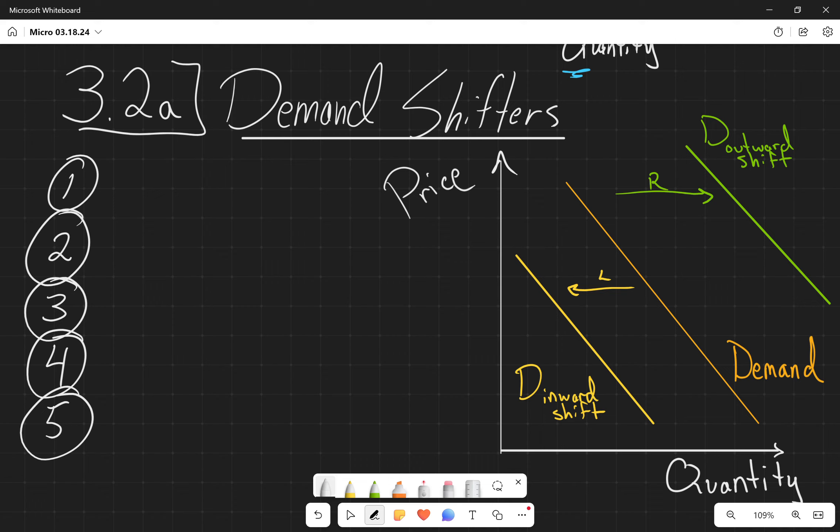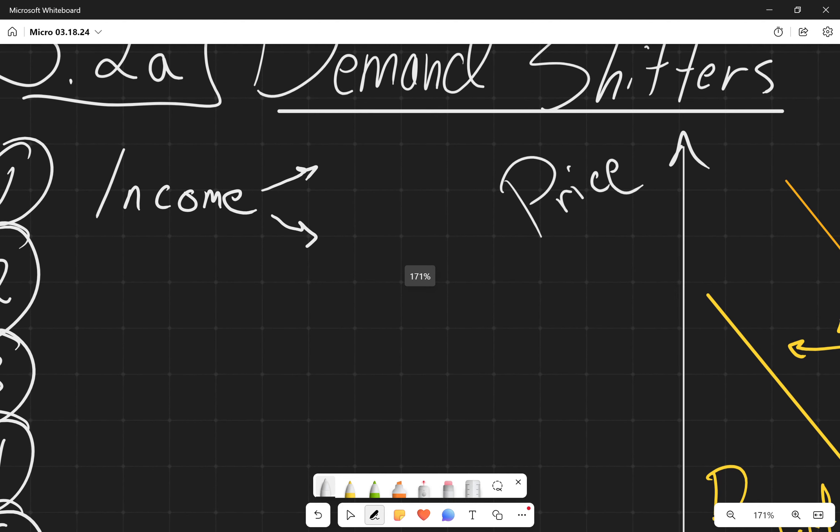All right, so the first factor that we have here is income. Income, speaking of tuition, reasons why you're paying it, things you can't be getting while you're paying it, not as much as you want. So income has a lot to do with how much consumers are desirous of different products, different goods and services. But when we're talking about income, we have to be specific and we have to kind of zoom in a little bit, because there's a couple types of income effects that could happen.